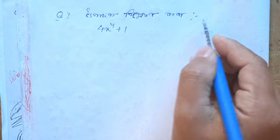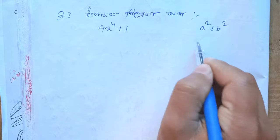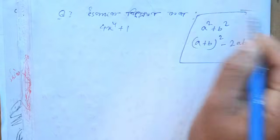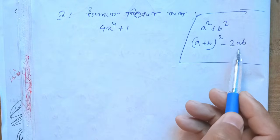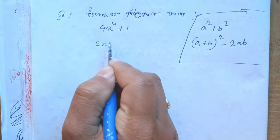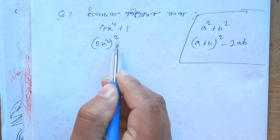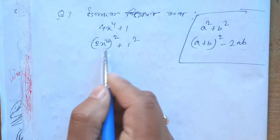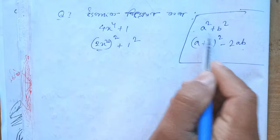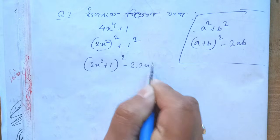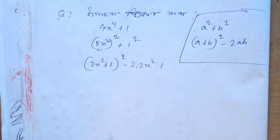If we look at the next step, we need to know that a squared plus b squared equals a plus b whole square minus 2ab. So a squared plus b squared equals a plus b whole square minus 2ab. Here we are going to apply this identity with 2x whole square.